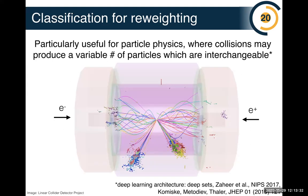This is particularly useful for particle physics where a collision may produce a variable number of particles with a lot of symmetry. Here's a particular simulated collision event where electron and positron collide and out goes collision debris — all these lines and blobs. There have been major advances in generative models, but classification is well ahead of generation. The results I'll show are based on the deep sets architecture — an architecture that's set-based and allows variable-length permutation-invariant operations.